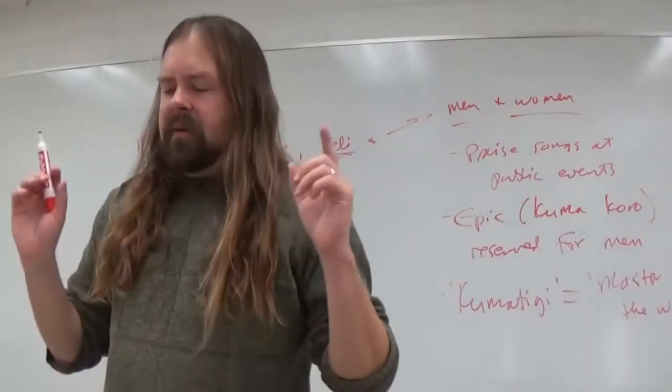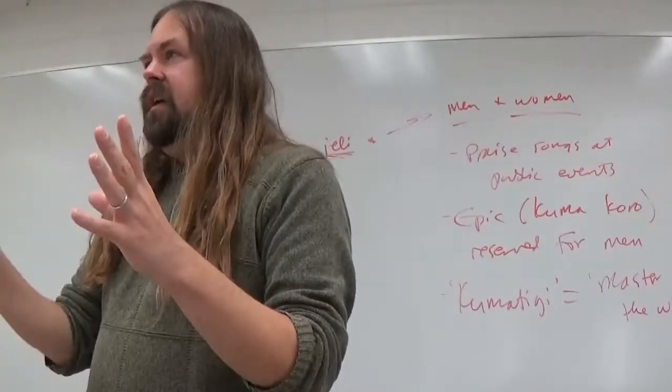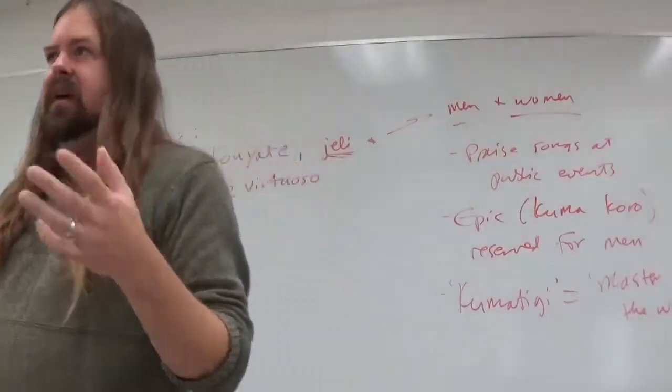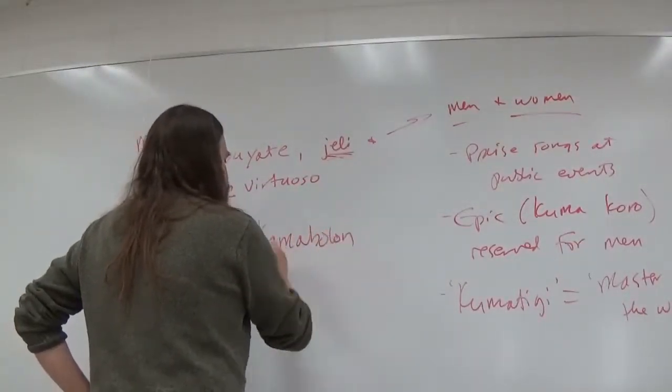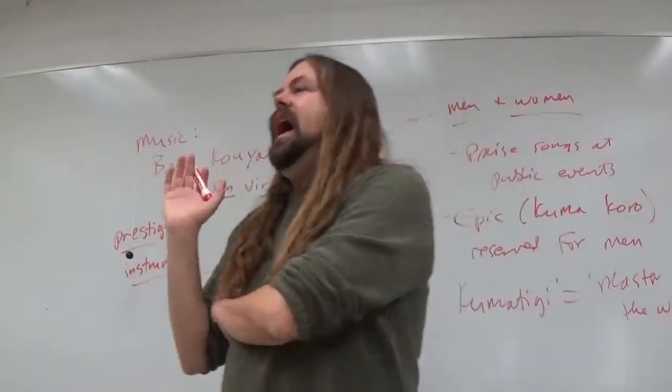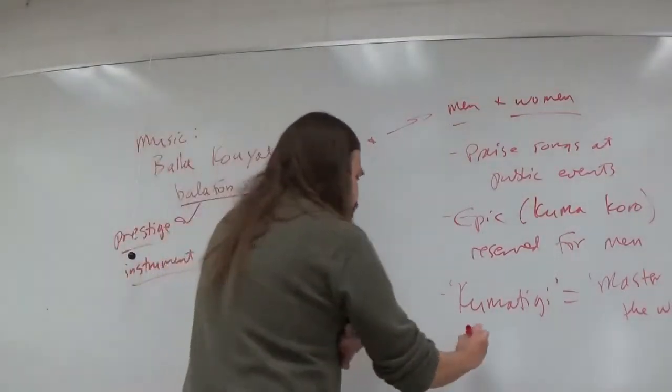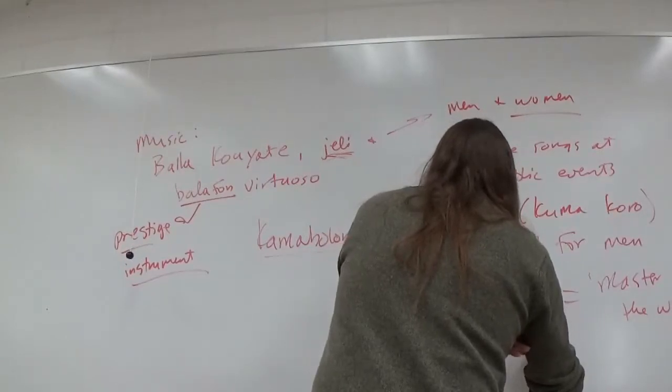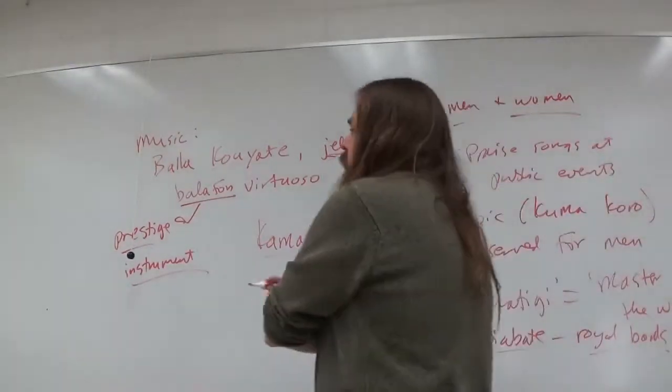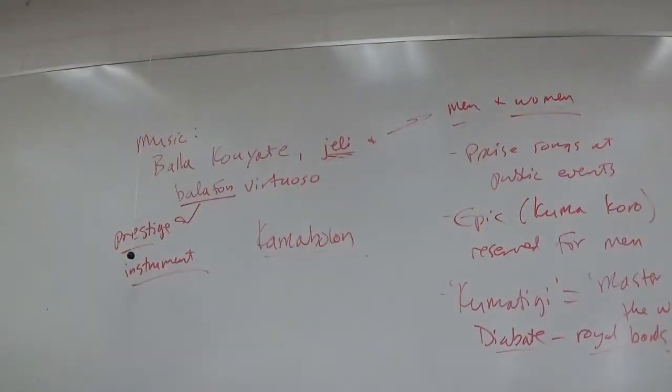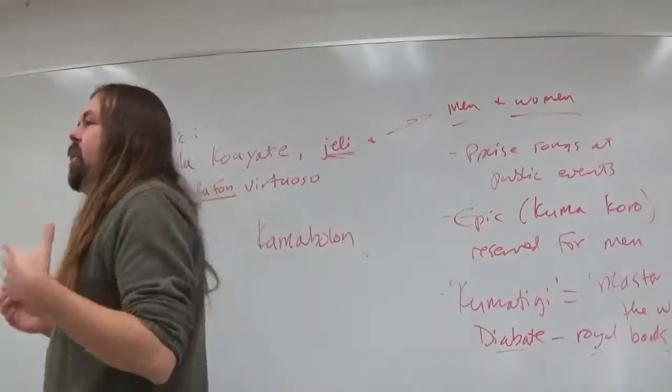And not even all men who happen to be of the jelly class of that particular profession. Usually each clan has what's called a kumatigi, which translates to master of the word. So these clans of bards will usually have a chief bard, and the most important performances are given to him to do. For example, at the Kamabolon ceremony that takes place every seven years, the kumatigi of the Diabati clan, the royal bards, will perform the Sunjata epic.